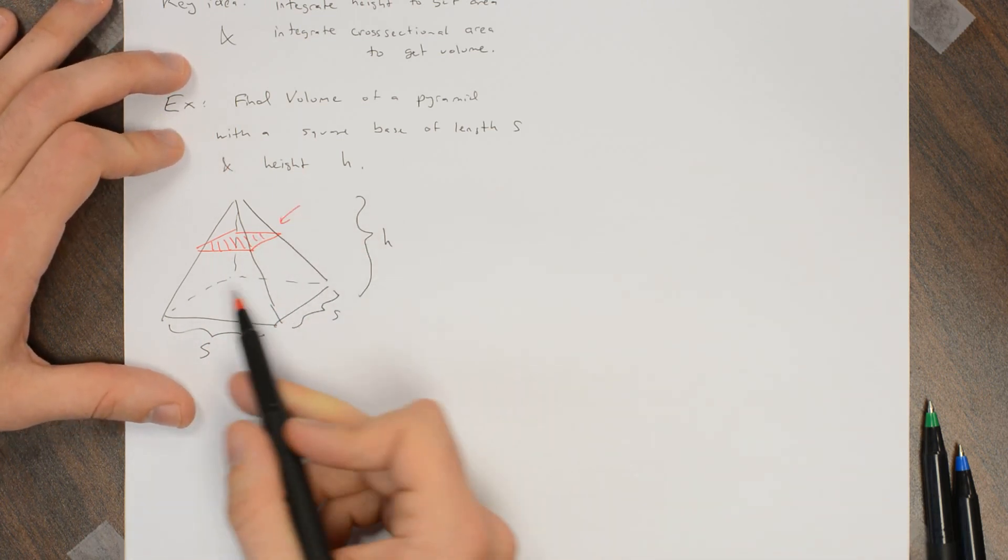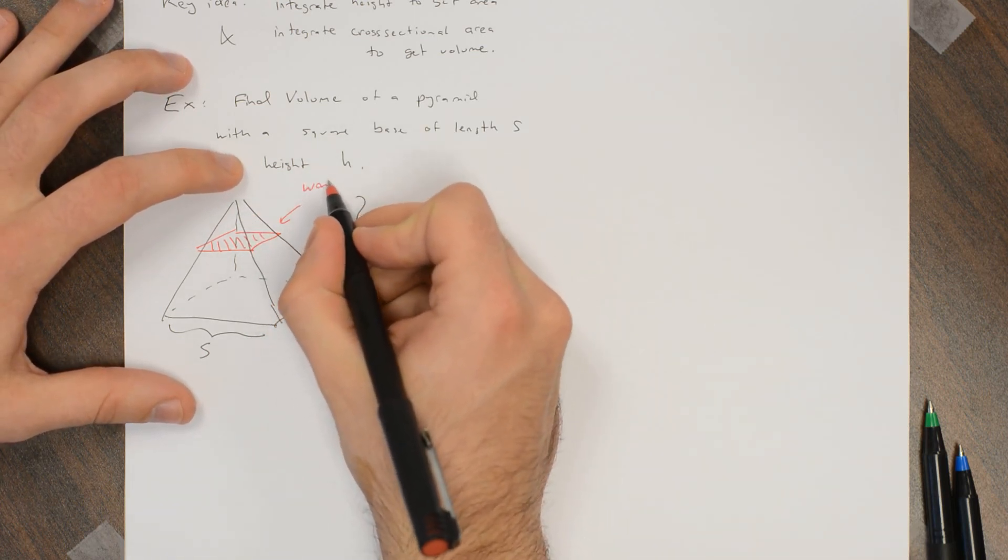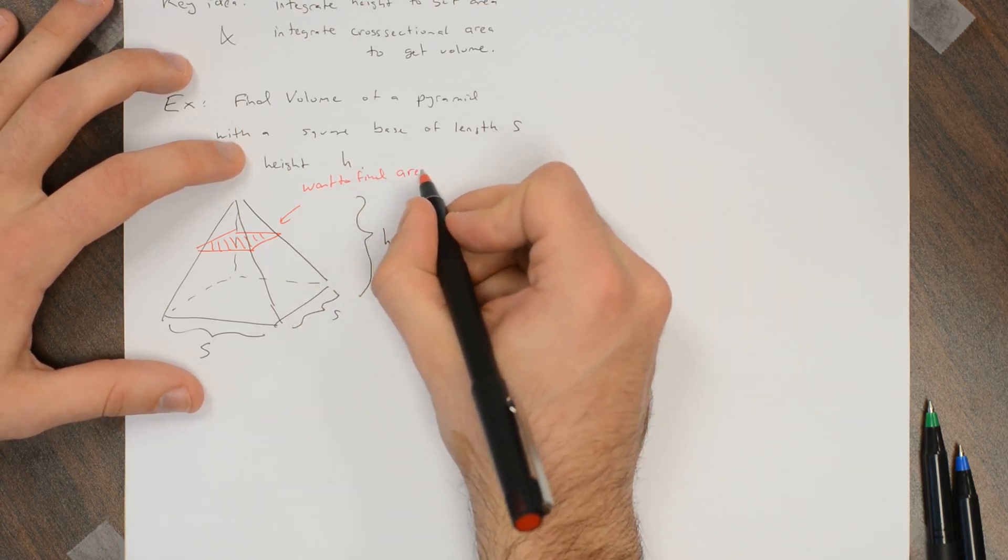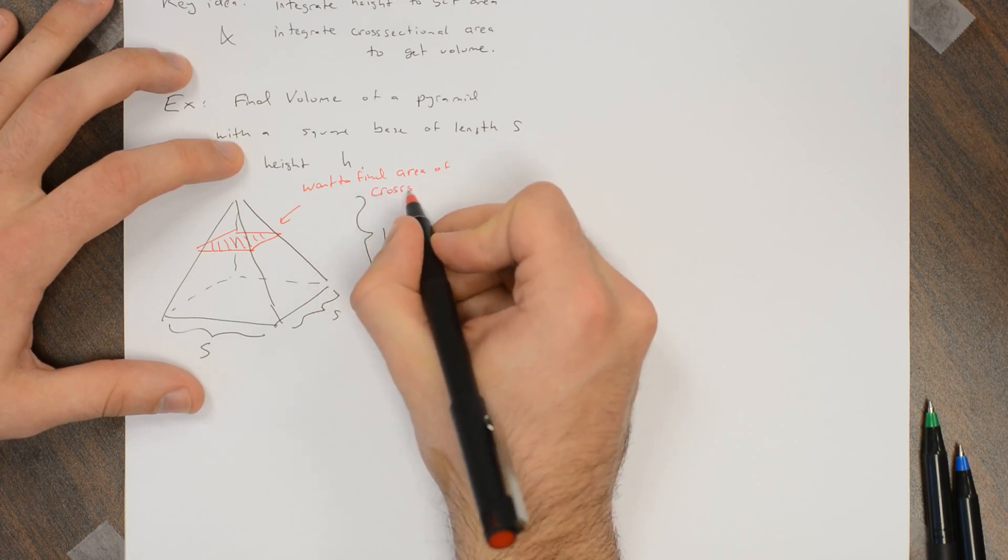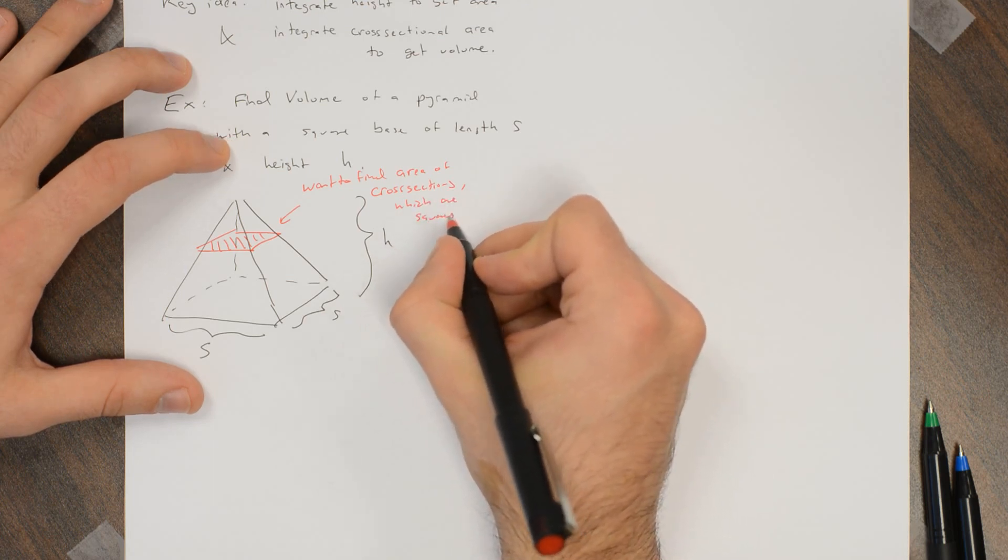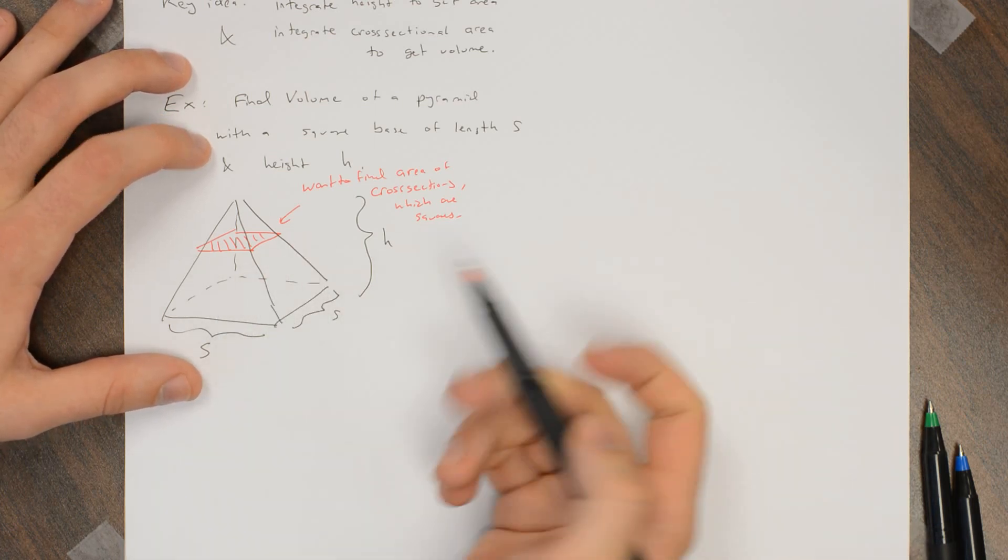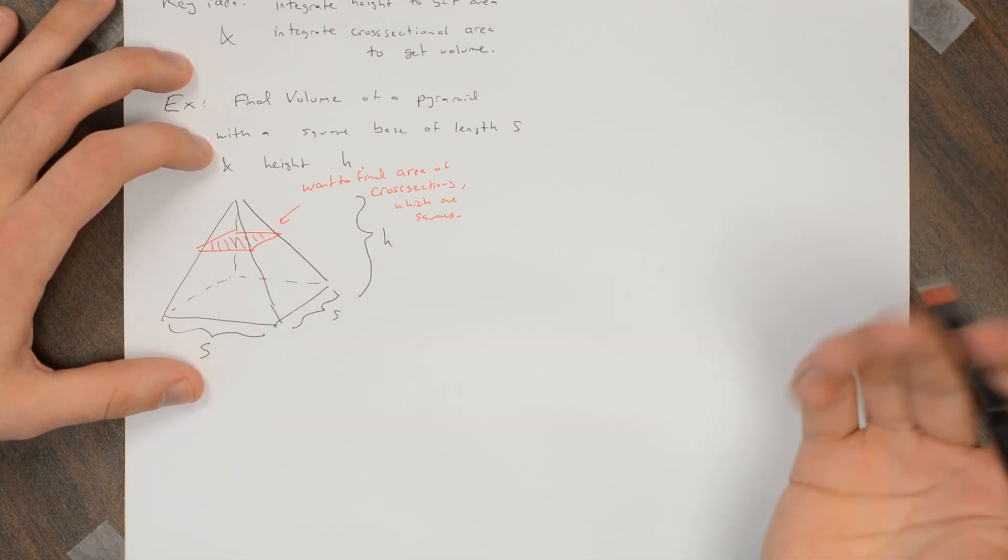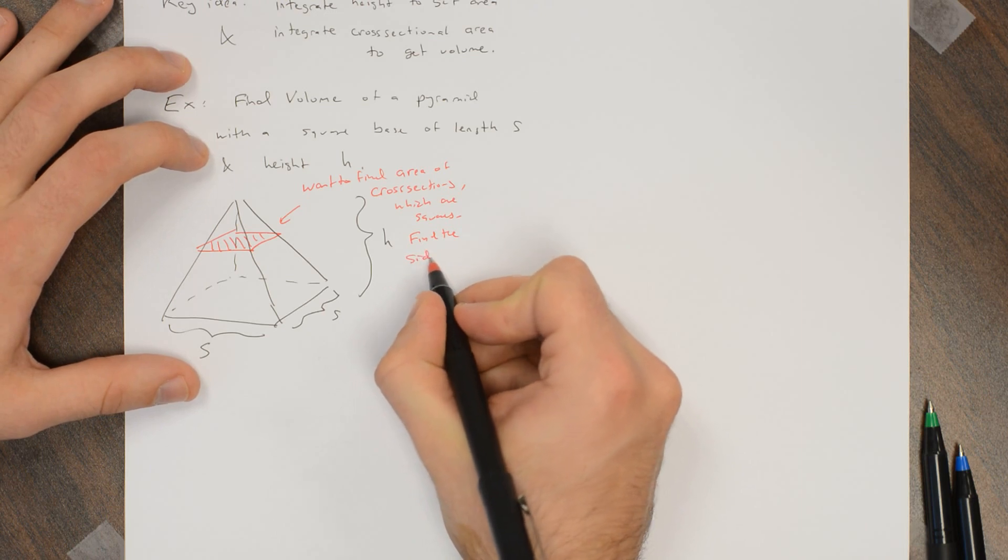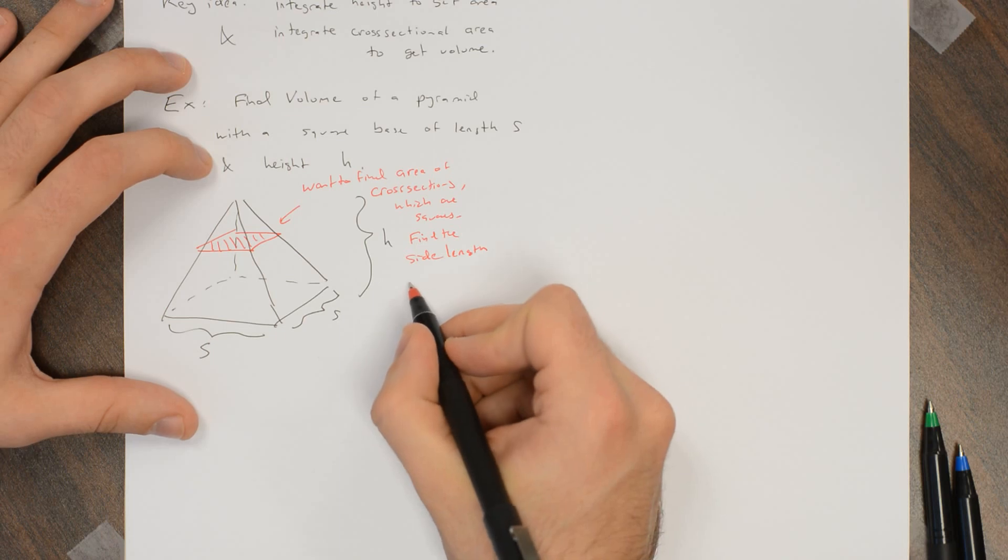And if we can find the area of those squares, I can integrate these areas of the squares and get the volume. So we want to find area of the cross-sectional squares. And to find the area of a square, all I need to do is find the side length of the square and then I square the side length to get the area. So find the side length and square it.